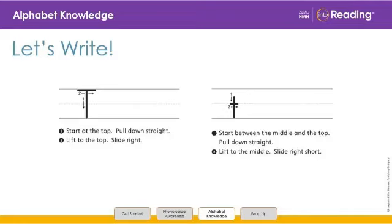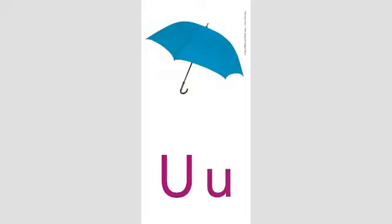We learned the letter T makes the sound T as in tiger. What letter? Terrific T. Now let's move on to our next letter. This is uppercase U and lowercase U. What letter? Say it with ultra high voices. Now ugly voices. U.